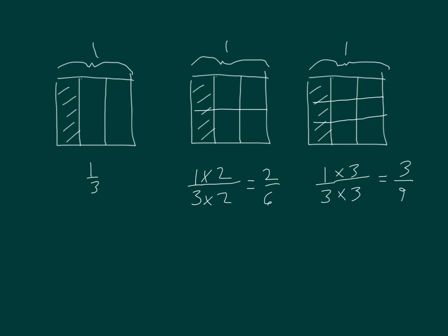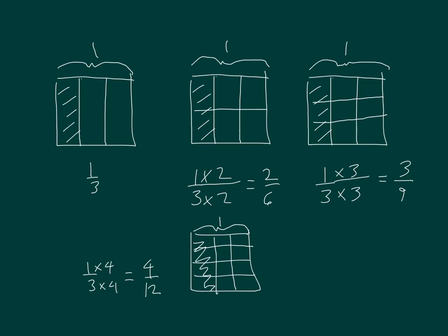Can you draw one? Can you draw for 1 third equaling times 4 and times 4 in the numerator and denominator? What would you get? You would get 4 twelfths. And there's our model, what it would look like. 4 out of the 12 are shaded in, where we drew 3 horizontal lines.